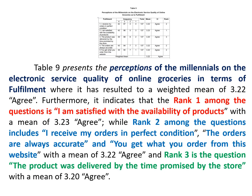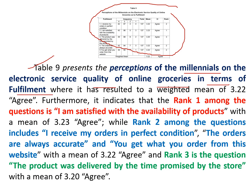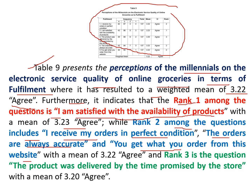Again, the first paragraph focuses on the table itself. For example: Table 9 presents the perception of millennials on the e-service quality of online grocery in terms of fulfillment, resulting in a weighted mean of 3.22, interpreted as Agree. Rank 1 is 'I am satisfied with the availability of products' with a mean of 3.23 Agree. Rank 2 includes 'I received my orders in perfect condition,' 'the orders are always accurate,' and 'you get what you order from this website,' all with a mean of 3.22 Agree. Rank 3 is 'the product was delivered by the time promised by the store' with a mean of 3.23 Agree.